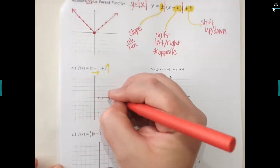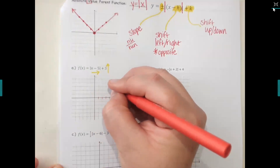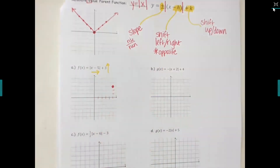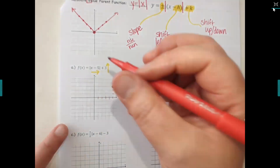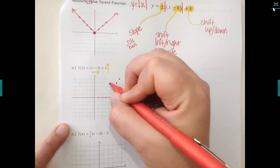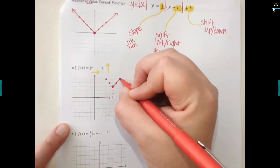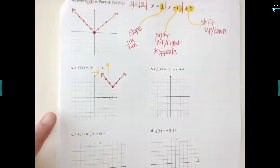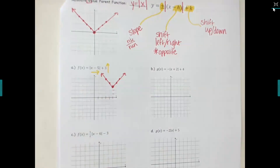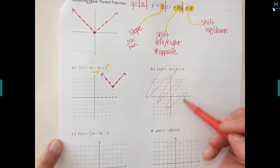One, two, three, four, five — then one, two, three. There's no slope number in the very front, so keep perfect diagonals. Take that starting point and hit the top corners in both directions. It's the same V shape, but the numbers moved it to the side and then moved it up.